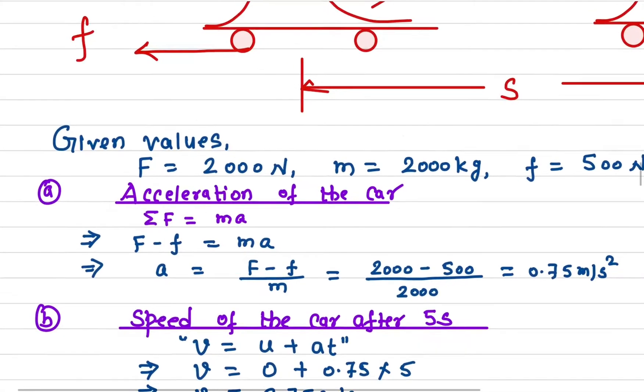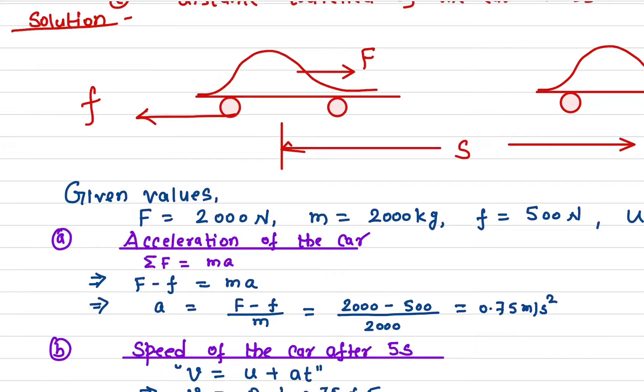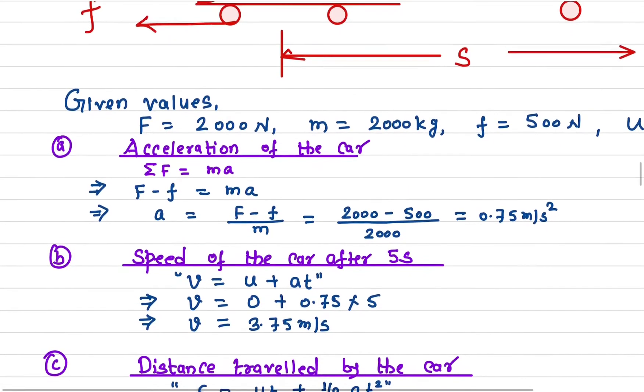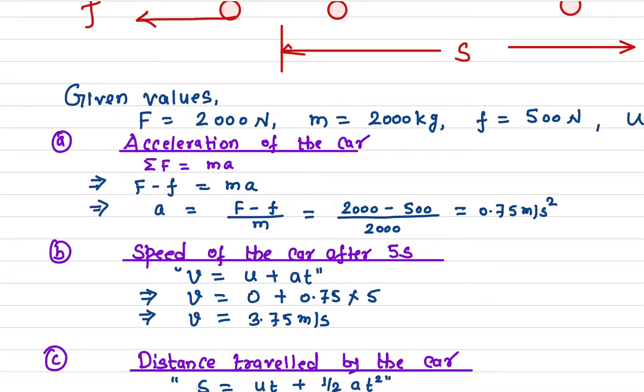In this direction we have the net force is F, which is the applied force, minus this italic f which stands for the friction force, and equals mass times acceleration. So the acceleration will be the net force divided by the mass.